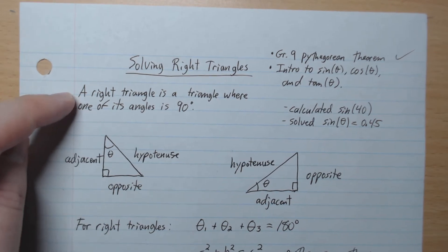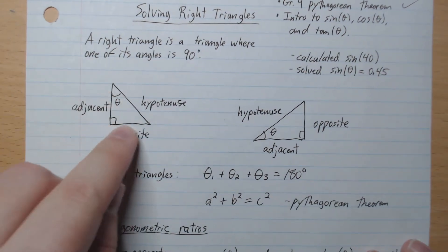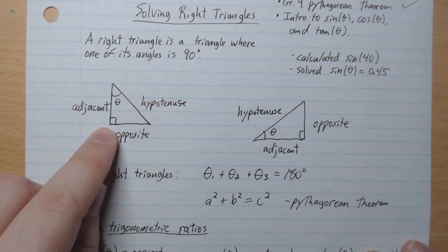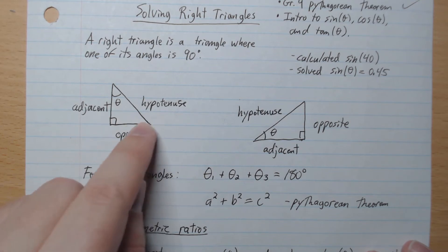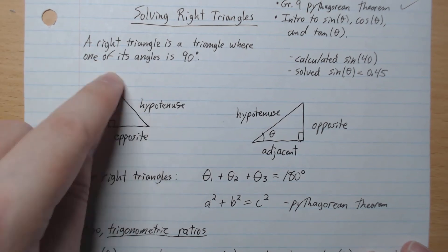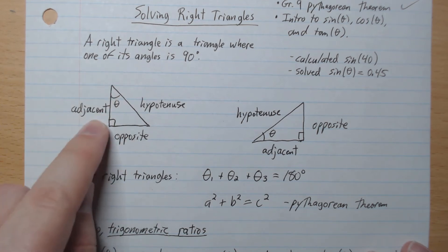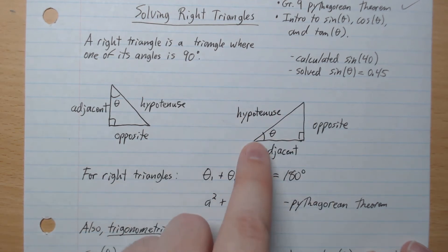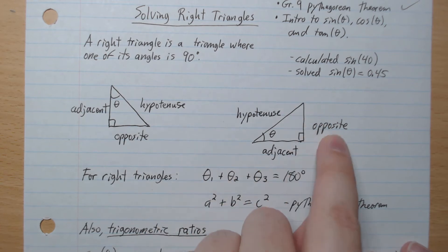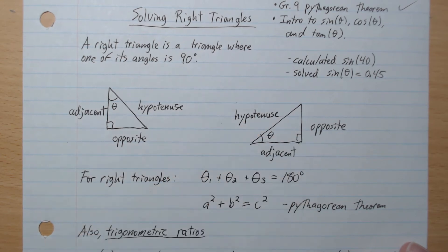A right triangle is a triangle where one of its angles is 90 degrees. We're going to practice some terminology here. We notice that this is a right triangle because of the 90 degrees. If we consider this angle here, theta, then this length is called opposite of theta, this length is called the hypotenuse, and this length beside the theta is called the adjacent side. The opposite length is called opposite, the length beside it is called adjacent, and the longest length is called hypotenuse, which is always across from the 90 degree angle.